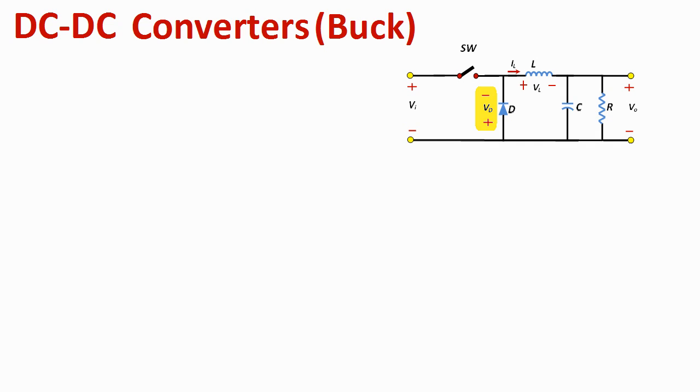We are interested in defining the relationship between the input voltage and the output voltage. The circuit has two operational modes. The first mode is the continuous mode, where the current through the inductor doesn't reach zero — there is always a non-zero current flowing. This happens when the load current is very large. The other mode is the discontinuous mode, where the inductor current reaches zero, which happens when the load current is very small.